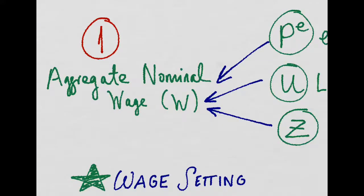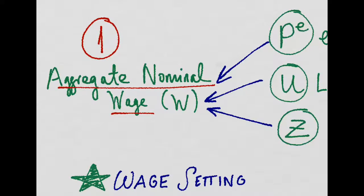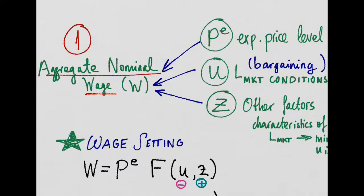So first we want to understand how the aggregate nominal wages are set. Imagine we're looking at this with the perspective of a worker who's thinking, what wage should I ask for? Imagine that we are trying to set the wage that we will receive next period.